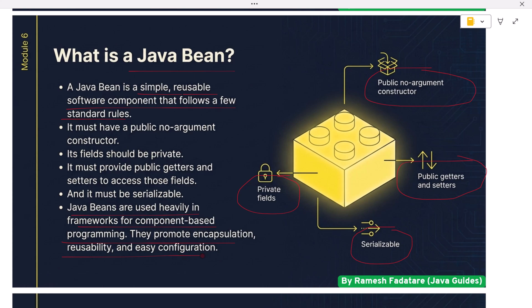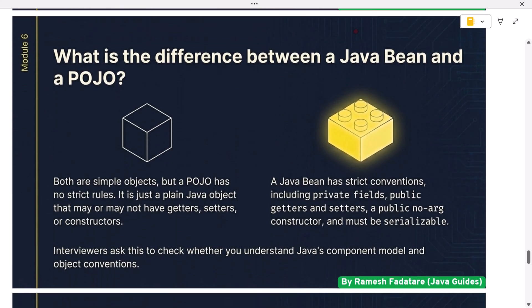What is the difference between a Java Bean and a POJO? Both are simple objects, but a POJO has no strict rules — it is just a plain Java object that may or may not have getters, setters, or constructors. A Java Bean has strict conventions: private fields, public getters and setters, a public no-argument constructor, and must be serializable. Interviewers ask this to check whether you understand Java's component model and object conventions.